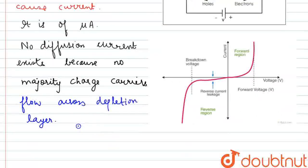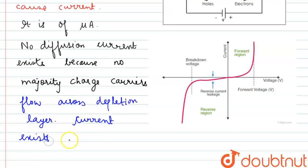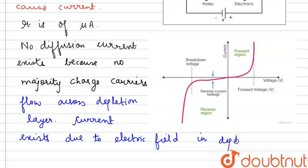There will be only current that exists due to electric field in the depletion region.